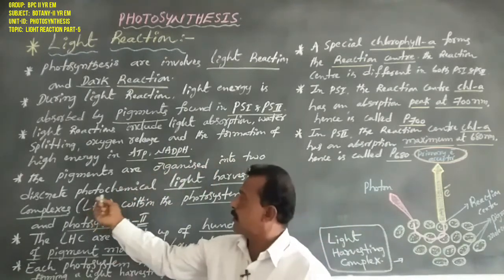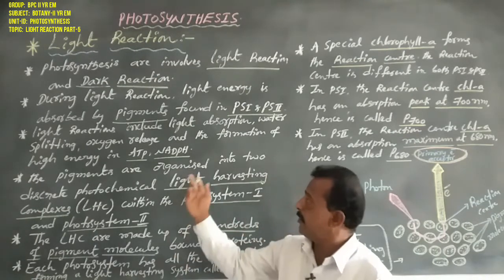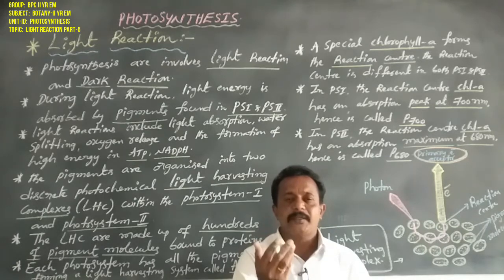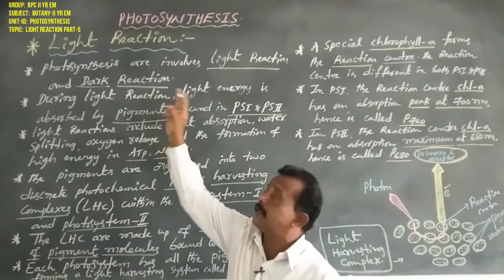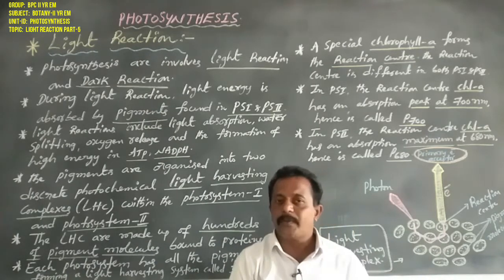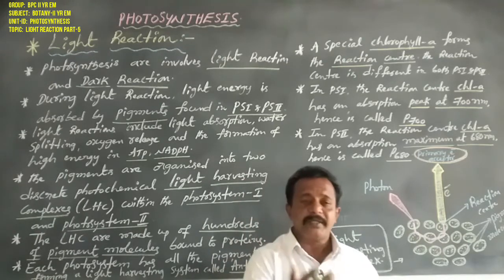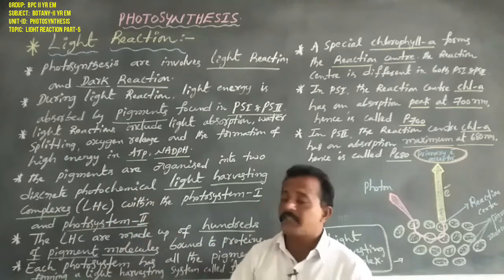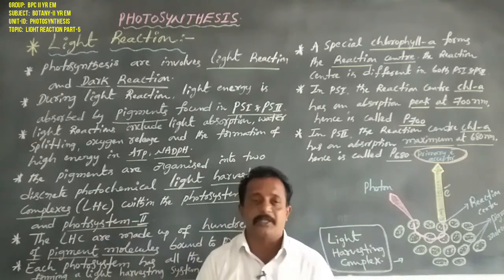The pigments, such as chlorophyll and carotenoid pigments, are organized into two distinct photochemical complexes. These pigments convert light energy to chemical energy. Especially chlorophyll pigments in the presence of sunlight — this is the light reaction. The light energy is converted to chemical energy by the light harvesting complex, that is LHC.